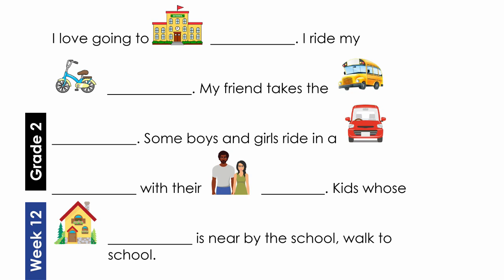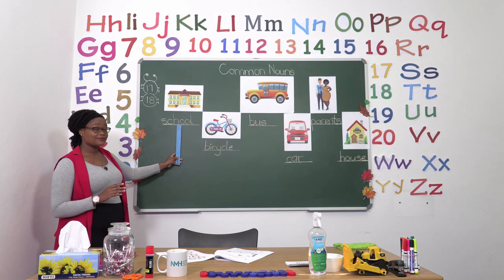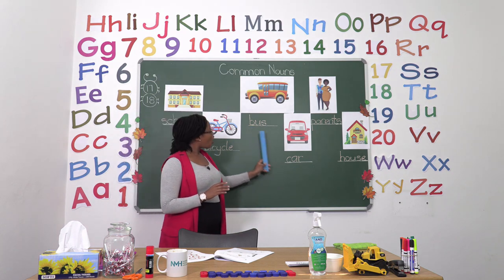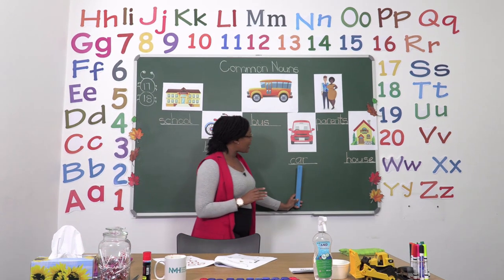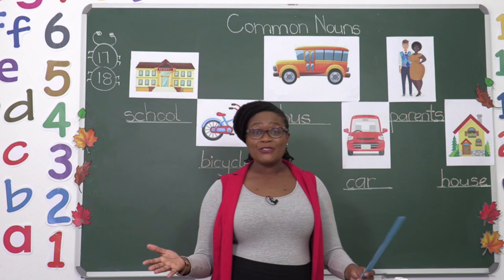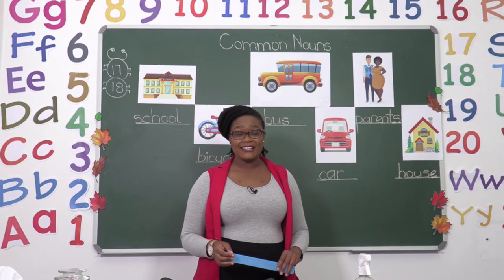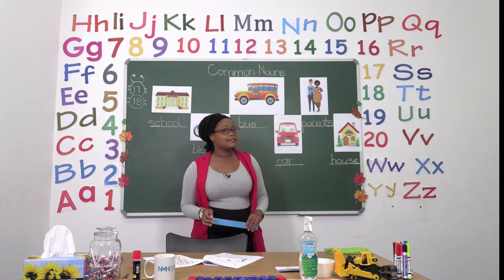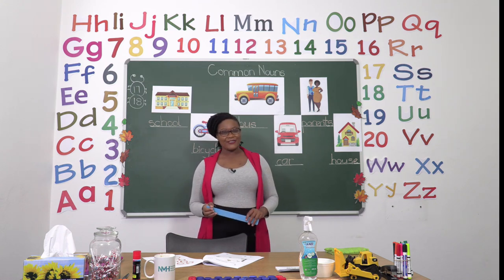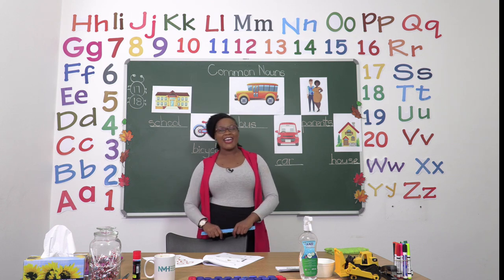Now it's your job to fill in the correct words. Let's take a look at the board for the last time so you can see the words. We have: school, bicycle, bus, car, parents, and house. Take your time. Make sure you spell each of the words correctly. If you need a little help it's okay to ask. Just make sure you finish your exercises, both of them, by yourself. Have fun and I'll see you soon after the advert break.